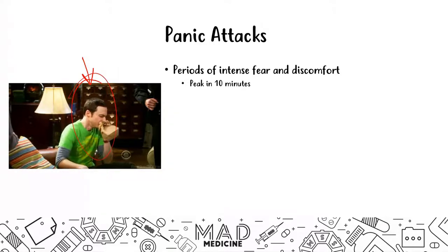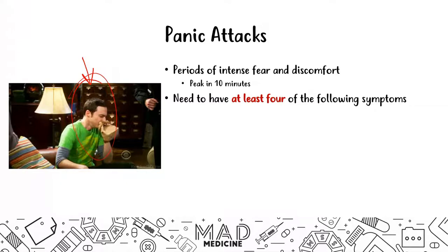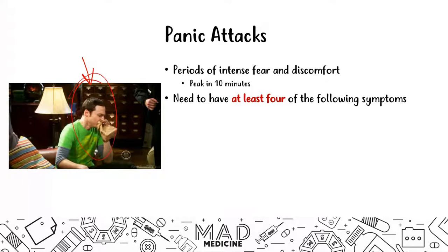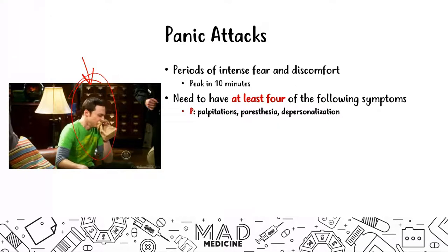When diagnosing someone with a panic attack, there are several symptoms to be aware of — they need to have at least four of the following. We've split these symptoms by the first letter of each word and created a mnemonic to help you memorize them. The first letter is P, which stands for palpitations, paresthesia, or depersonalization. They may feel heart palpitations, or they may perceive themselves from a third-person point of view during the attack.